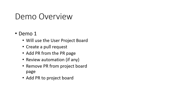In the first demo, I'm going to use the user project board that we created earlier. I'm going to create a pull request and add it from the pull request page. We'll see if any automation happens, then I'm going to remove it from the project board and add it directly from the project board — just to show you both ways that you can add a pull request to the project board.